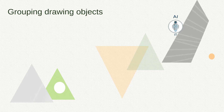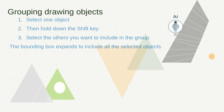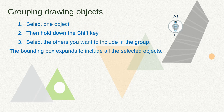Now let us learn how to group the drawing objects. We had seen this in the earlier video and will be exploring the other options to group and ungroup an object. We need to select the first object, hold the shift key and select all other objects to be included in the group. You can find that the bounding box expands to select all the objects you have clicked.